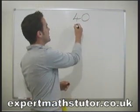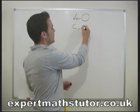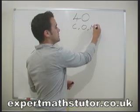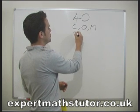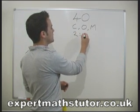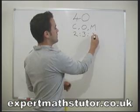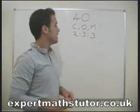Now, we know there's got to be a total of 40 in each bag, and we know that the coffee, the orange, and the Maltesers have to be shared out in the ratio two to three to three.